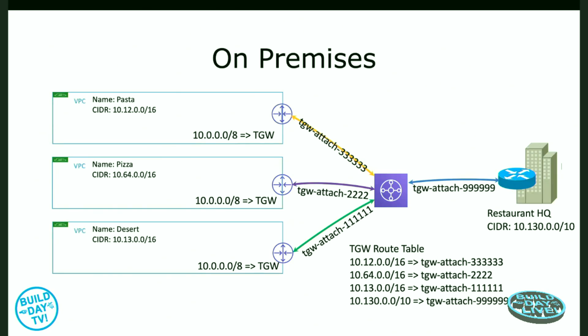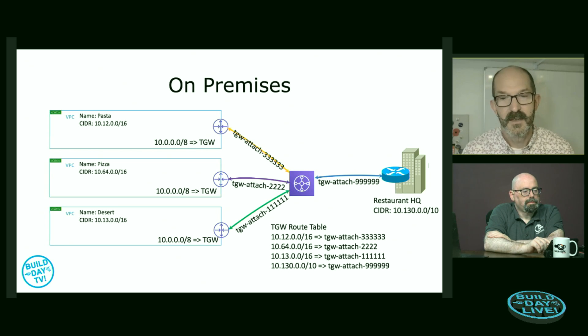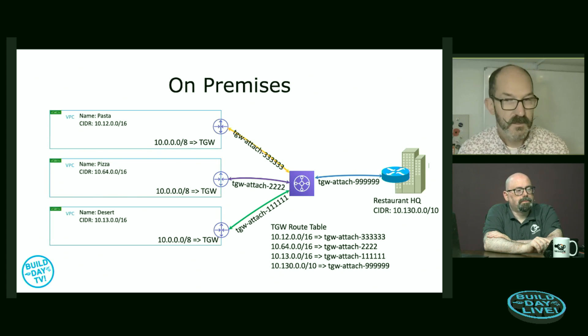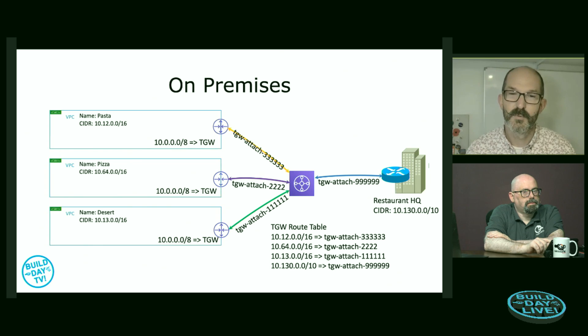When we connect back to on-premises, we just add an additional route. I've drawn a VPN connection back to the RestaurantHQ, which is also inside our 10.0.0.0 network. That route from all of the VPCs pointing to the Transit Gateway includes the route down to our RestaurantHQ network. In the Transit Gateway's route table, there's just a definition that the RestaurantHQ network of 10.130.0.0/10 goes down to the RestaurantHQ attachment — still really simple, broad route tables.